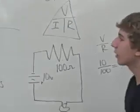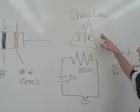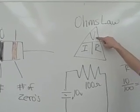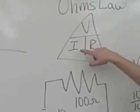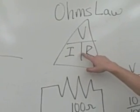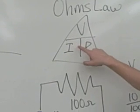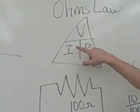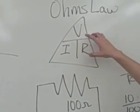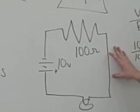And here, how we use resistors in math is with Ohm's Law. We have volts — you can find volts by multiplying I times R, which is resistance times current, or any other way you want to find this.